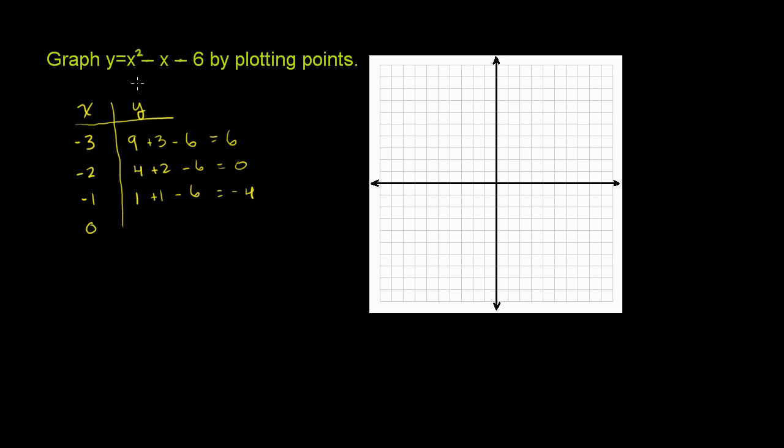Let's go to 0. If x equals 0, these two terms are 0 and then y equals negative 6. Let's go all the way to positive 3. If x equals 1, we have 1 squared minus 1, those cancel out, and then you have just a negative 6 there.